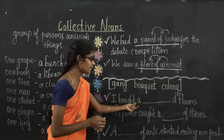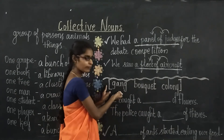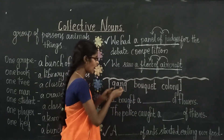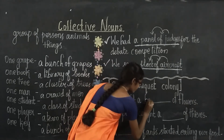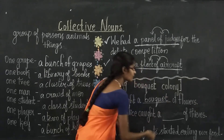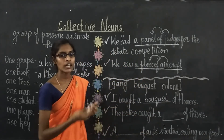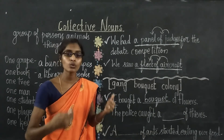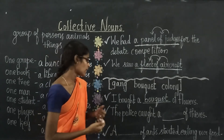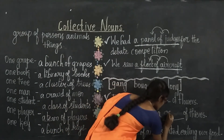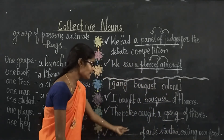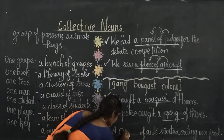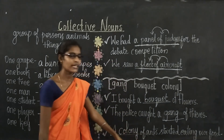Here is another example with choices. 'I want a ___ of flocks.' From the choices — gang of flocks? No. Flock? We need to choose the correct group name. Next: 'The ___ of ants started eating the food.' The correct answer is 'colony of ants.' A colony of ants started eating the food.